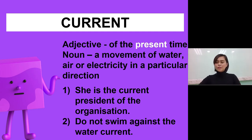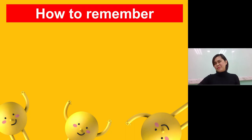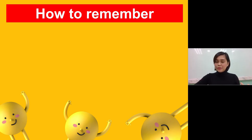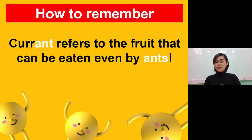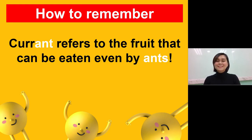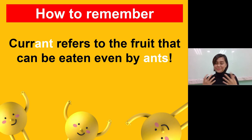Here's a good question: how do we remember the difference between these two words — when do I use the one with the second vowel as letter A, or the second vowel as letter E? Here's a good clue: 'currant' refers to the fruit that can be eaten even by an ANT — ANT is the last three letters of this word. It sounds funny, but this clue will help you remember the difference so you don't get confused about which one to use next time.